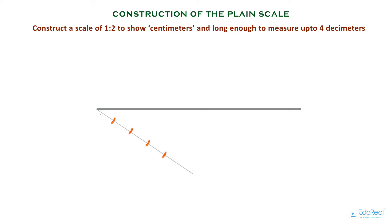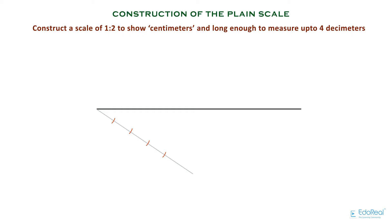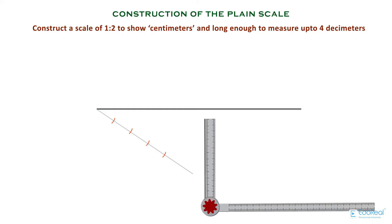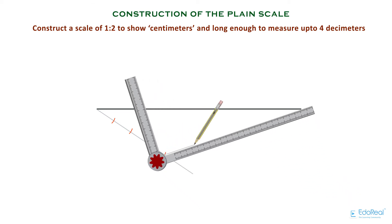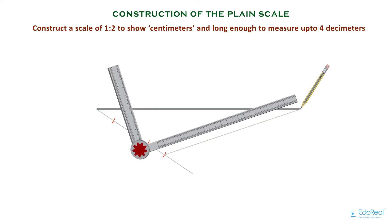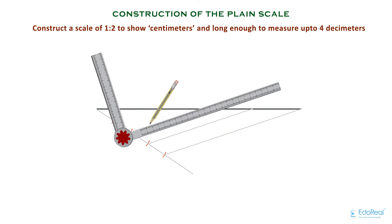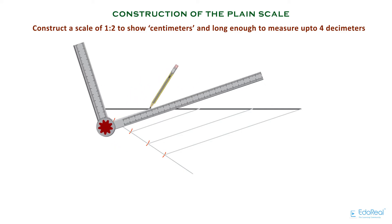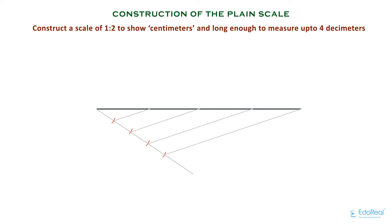We can use any number to divide the line — for example, 3 centimeters instead of 2 centimeters and still get the same result. To divide the original line into equal parts, we need to use a mini drafter. Place the mini drafter at the last arc and draw a line to the end of the original scale. Tighten the screw of the drafter, then take the drafter to the third arc and draw a line to the original scale, keeping the drafter fixed. These two lines are clearly parallel. Repeat the same process for the other two arcs. We can see the scale got divided into 4 equal parts.